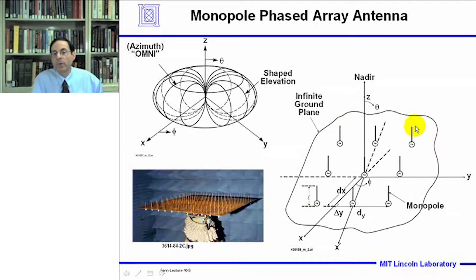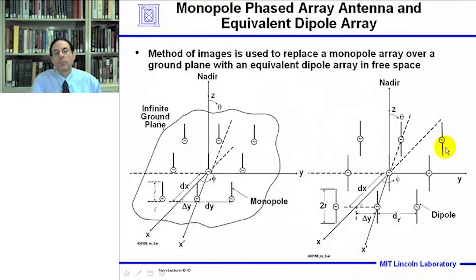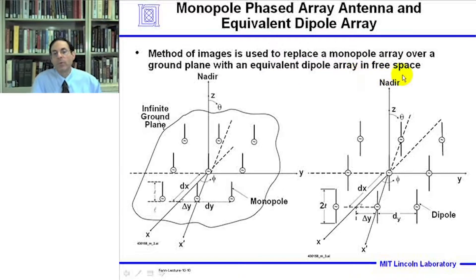The monopoles typically have a length of a quarter wavelength. To analyze a monopole phased array, we use an equivalent dipole array to represent the monopole array. We use the method of images to replace the monopole array over a ground plane with an equivalent dipole array in free space, as shown on the right. That makes the analysis easier.